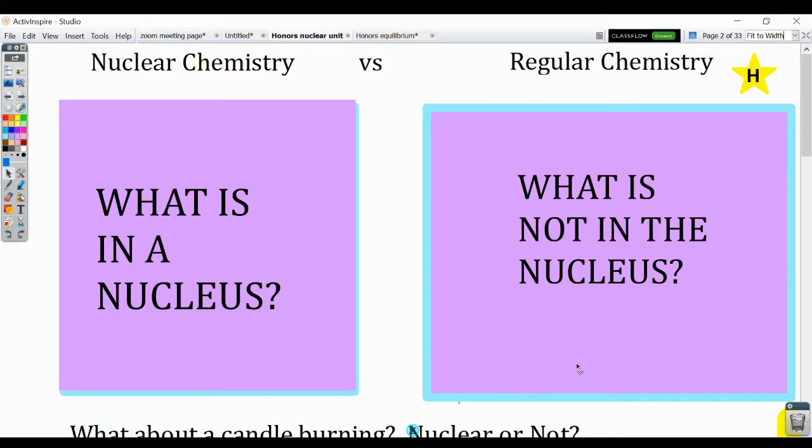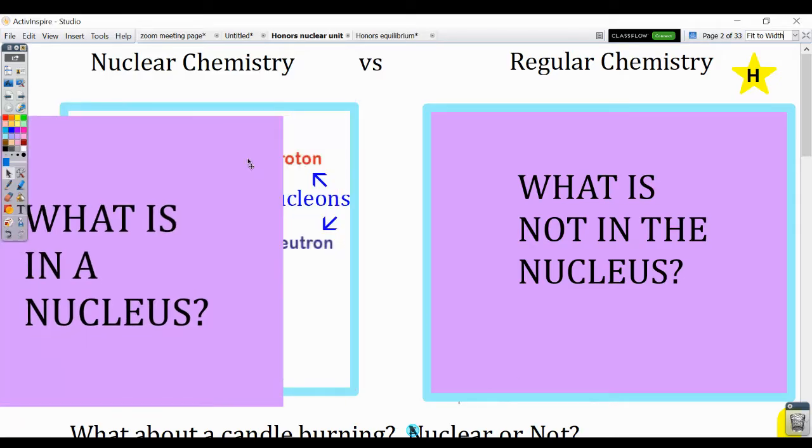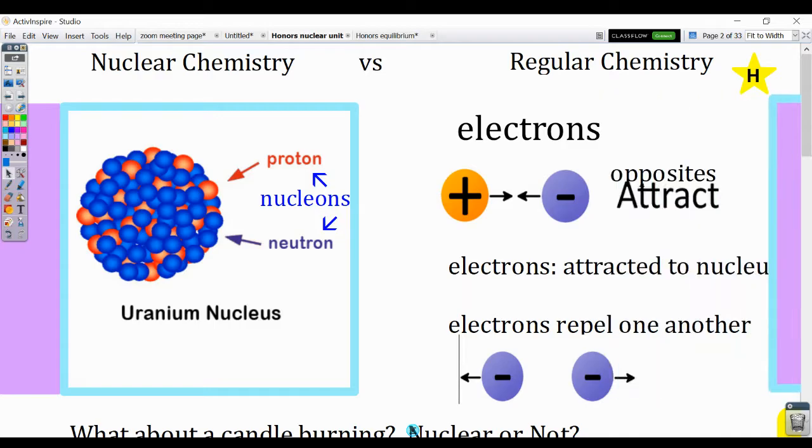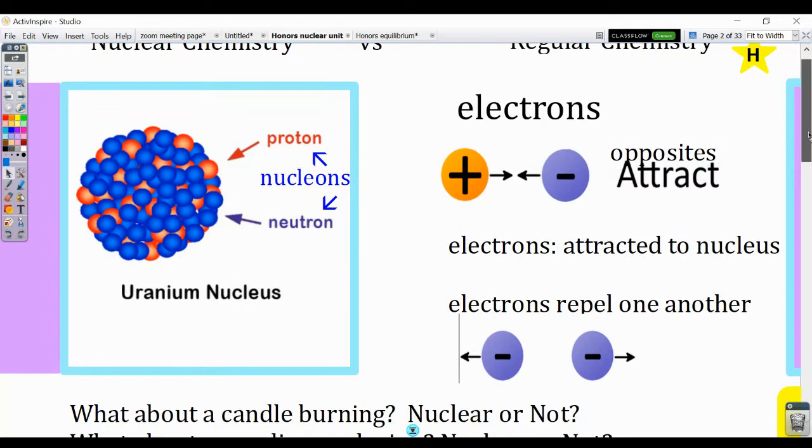From our study of the atom, we know that in a nucleus we have two subatomic particles: protons and neutrons. What's not in the nucleus? Electrons. Electrons are attracted to the nucleus, but they are outside the nucleus, repelling one another, zipping around outside the nucleus.